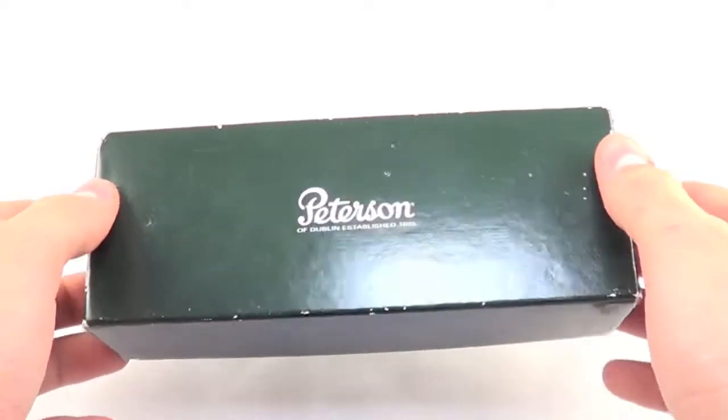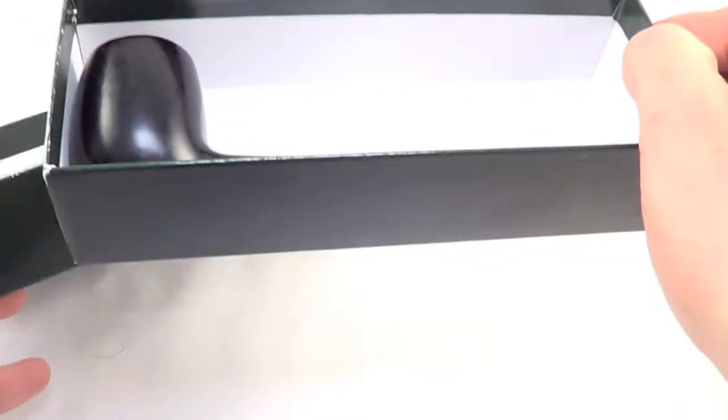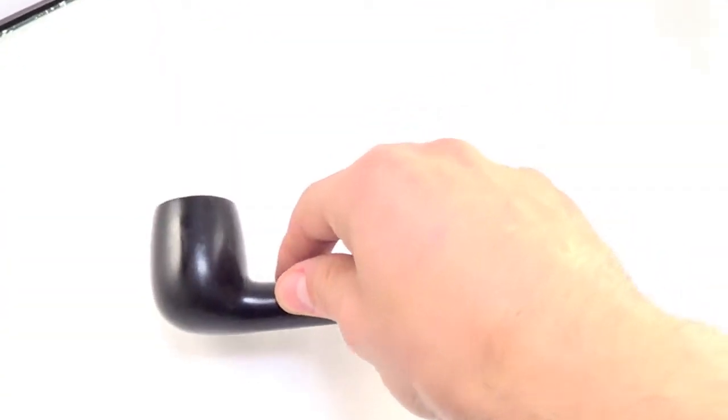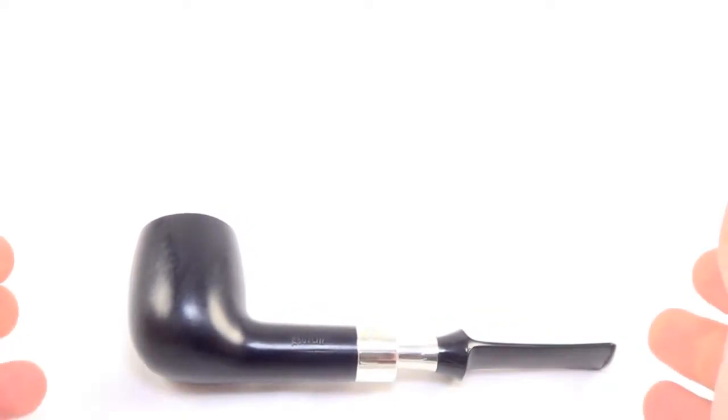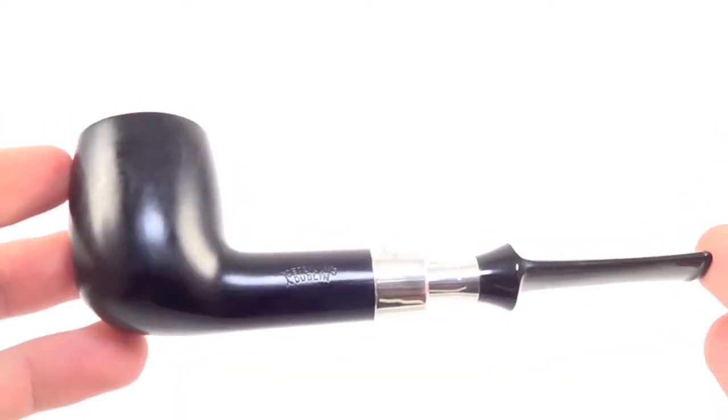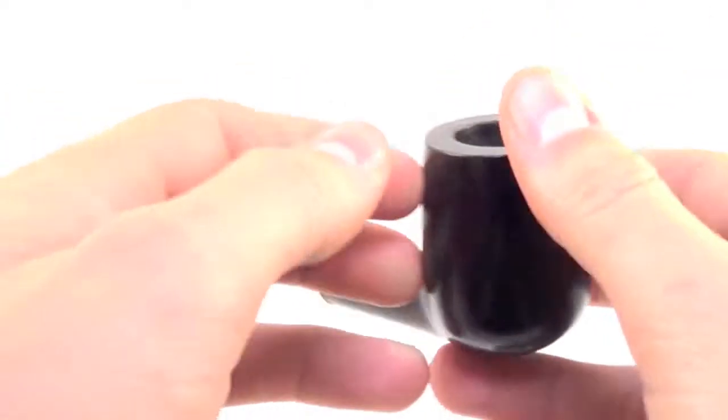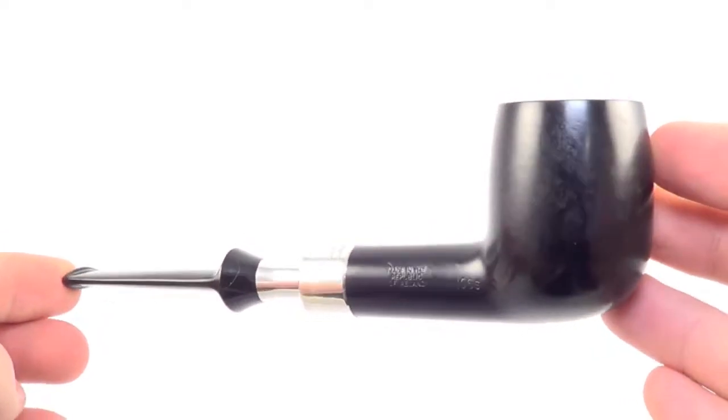Here is another Peterson pipe that comes with the original box. This is a beautiful Peterson dress finish or black briar. It is a classic billiard style pipe shape with the full silver spigot.